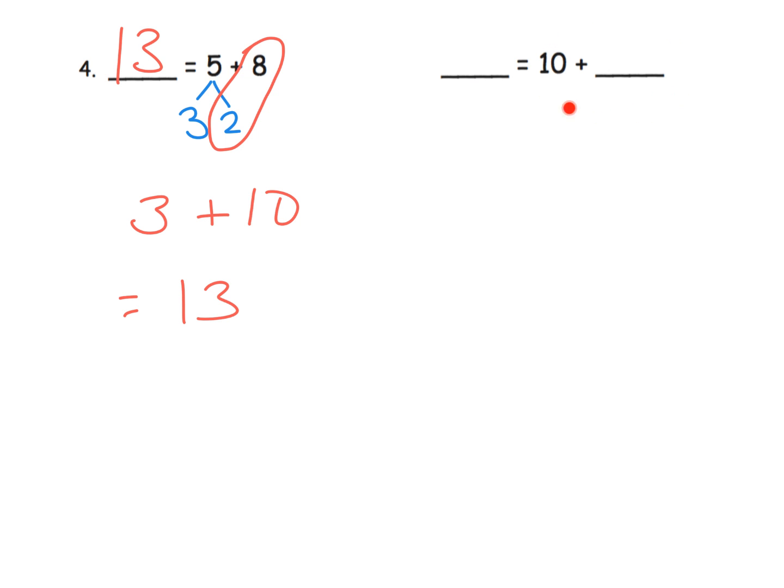So what are we going to do over here? Well, this thing right here says 3 plus 10. So we're going to write down 10 plus 3 because it's the same thing. It's commutative. 3 plus 10 and 10 plus 3 is the same thing, and that answer, of course, is 13.